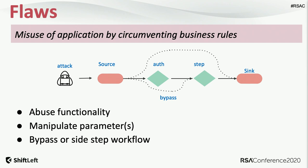Now let's look at what a business logic flaw actually means. When we looked at vulnerabilities it almost seemed like a straight line — someone enumerating a source, bypassing validation, and exploiting the sink. But attackers have evolved. The RSA theme is the human element, and in this equation the human element is the evolution of a typical offensive ethical hacker, bounty hunter, or non-ethical hacker. They now have the necessary instruments to examine the characteristics of your application.